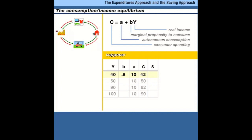Consumers spend 80 cents out of each additional dollar paid in income. If income is 40 and autonomous consumption is 10, then consumers are going to spend 0.8 times 40, or 32, plus 10 autonomous consumption — giving total consumer spending of 42. In that case, consumers are spending more than their income, so savings is going to be negative two. We could go ahead and put that in our table.